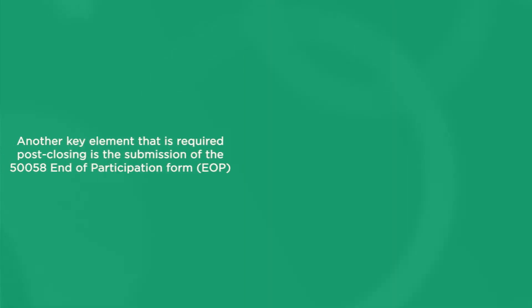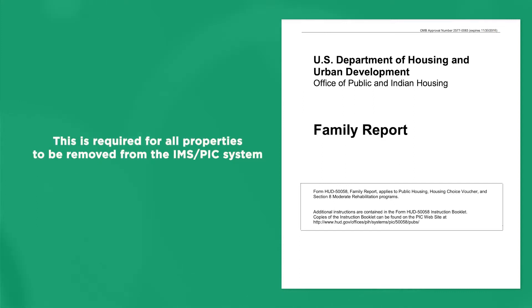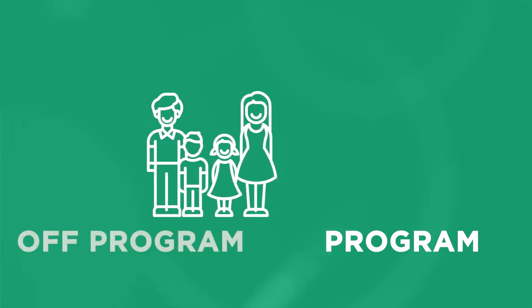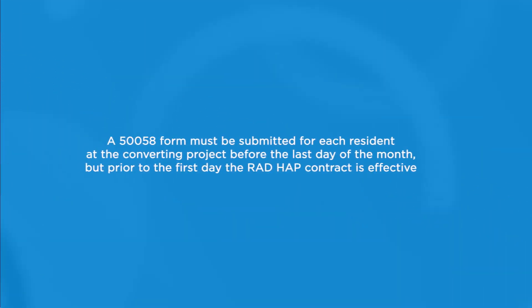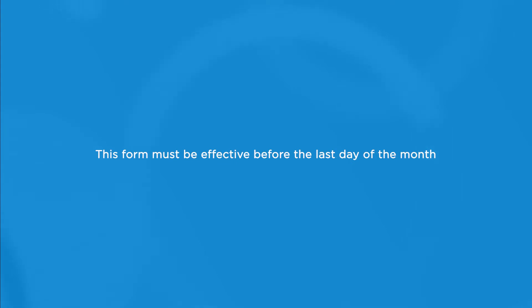Another key element that is required post-closing is a submission of the 50058 End of Participation form, or EOP for short. This is required for all properties to be removed from the IMS PIC system. It is also the step that formally transitions families receiving assistance off of the public housing program. A 50058 form must be submitted for each resident at the converting project before the last day of the month, but prior to the first day the RAD HAP contract is effective.